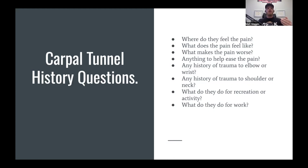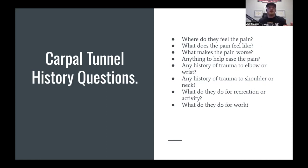Next thing I want to know is what makes it worse. A lot of times with a nerve entrapment, when they're not using it and just chilling out it doesn't feel too bad, but as soon as they start moving — reaching for something, working on the computer, typing — I want to see something makes it worse. Then I also want to know if there's anything that makes it feel a little bit better: maybe if they rest it, ice it, throw a brace on it, take an ibuprofen, or do a stretch. I want to see that something is making it a little bit better — not fixing it, but helping — because I'm really trying to decide if this is a soft tissue component that I can treat.